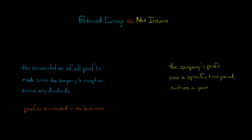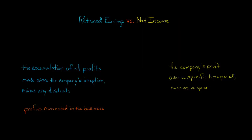In this video, we're going to discuss the difference between retained earnings and net income. Net income is just a company's profit for a set period of time — it could be for a quarter, a month, or a year. It tells you how profitable the company was during that period.